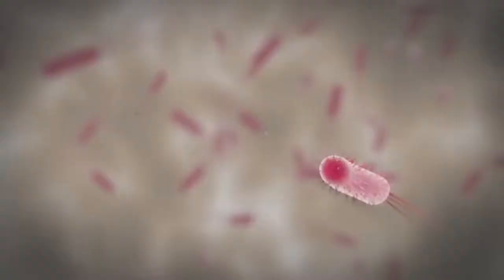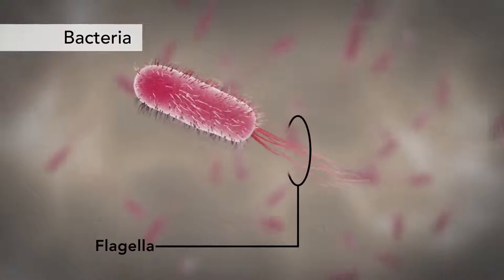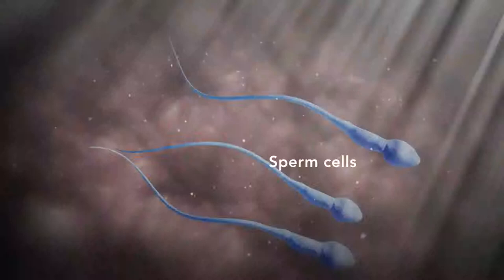Another unique feature in some cells is flagella. Some bacteria have flagella. A flagellum is like a little tail that can help a cell move or propel itself. The only human cell that has a flagellum is a sperm cell.